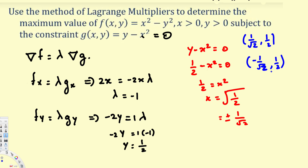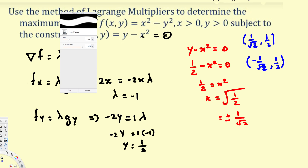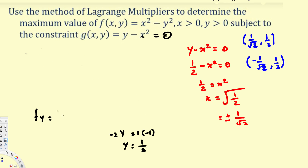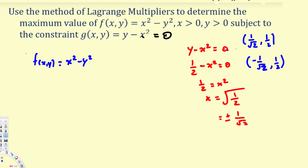Now we have two points. To find which gives the maximum, we plug each into the main function and see which gives the higher value. Our main function is f(x, y) equals x squared minus y squared. Let's evaluate at the first point, f(1/√2, 1/2).